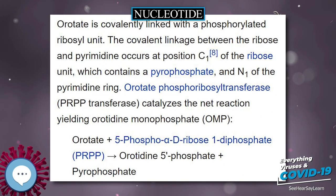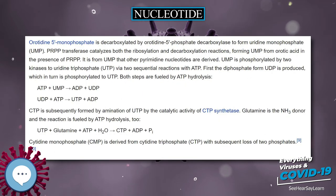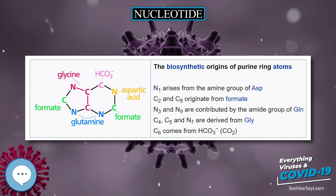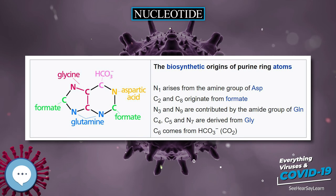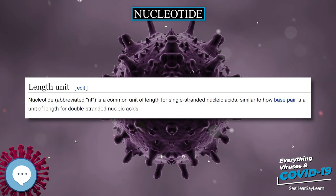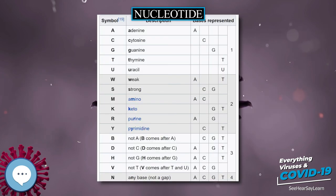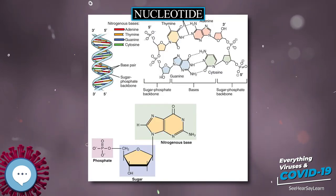Another study conducted in 2013 examined the impact of nucleotide supplementation on the immune system in athletes. All athletes were male and highly skilled in taekwondo. Out of 20 athletes tested, half received a placebo and half received 480 milligrams per day of nucleotide supplement. After 30 days, the study concluded that nucleotide supplementation may counteract the impairment of the body's immune function after heavy exercise.